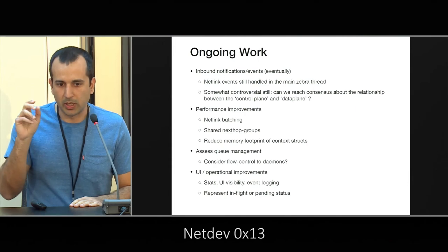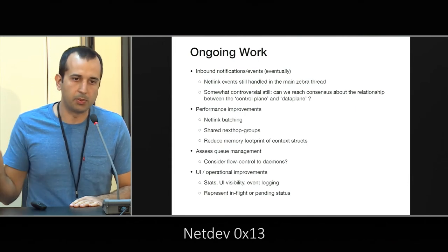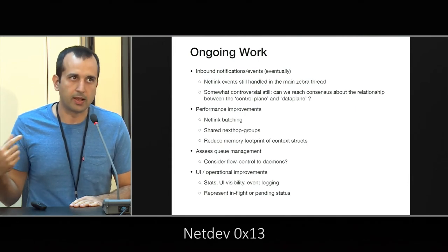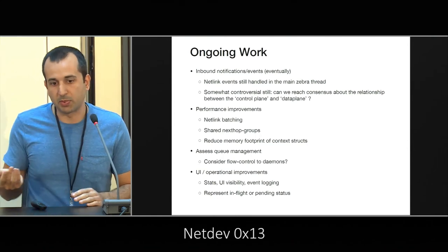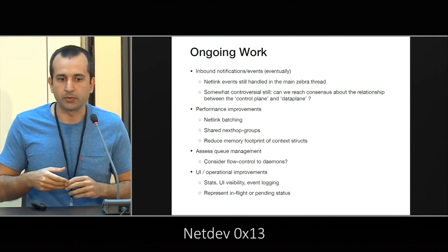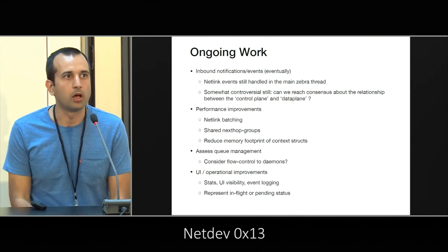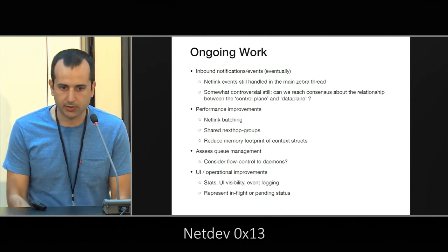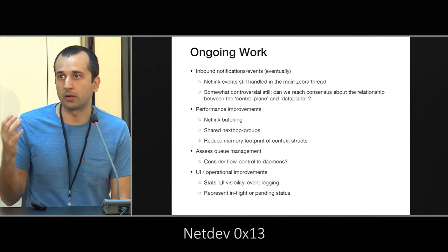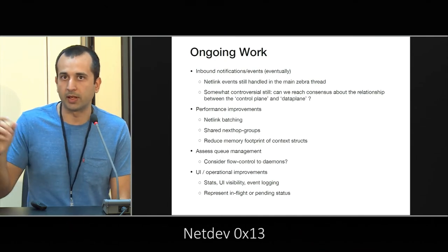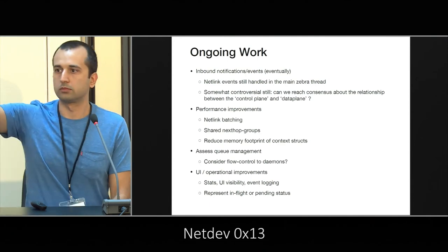So there's a lot of work to be done in terms of defining the APIs that a provider gets to consume. And then there are performance improvements — things like message batching which was mentioned before, sharing nexthop groups again, and reducing the memory footprint of these context objects.